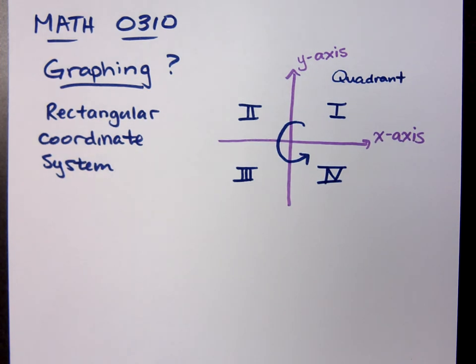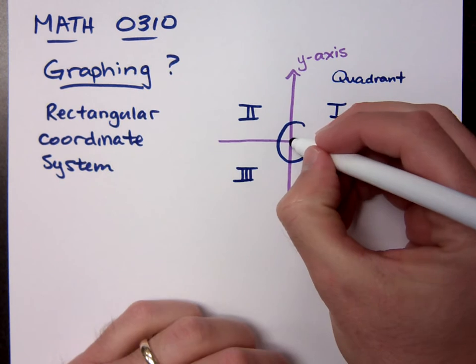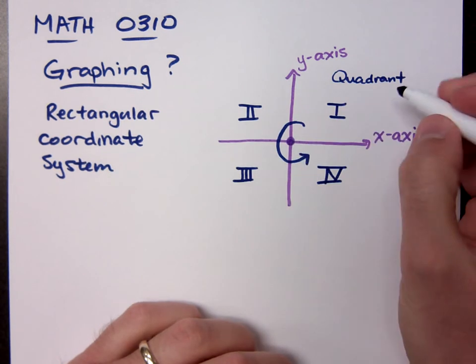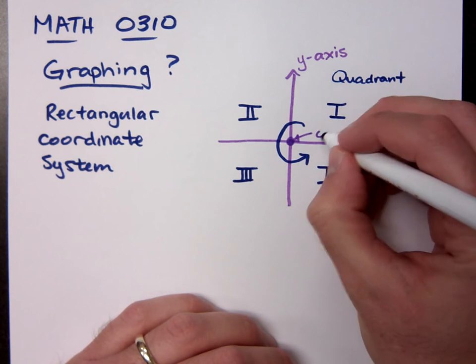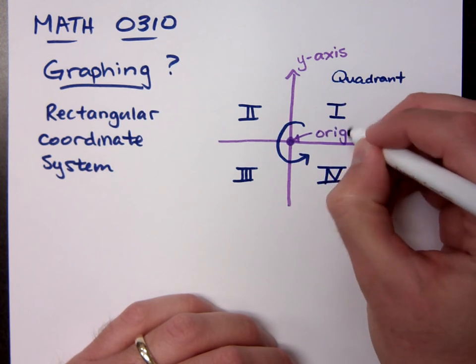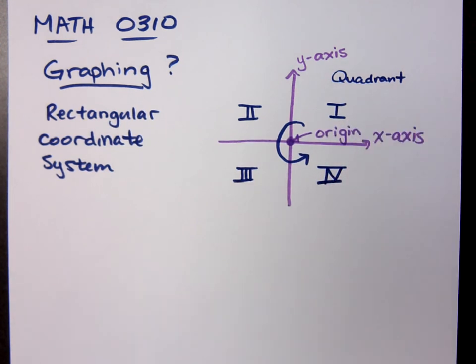When we talk about the rectangular coordinate system, we've got the axes, we have the quadrants. What is the point of intersection of these axes called? That is the origin. This is the guy where everything else is based off of. It's where we start.